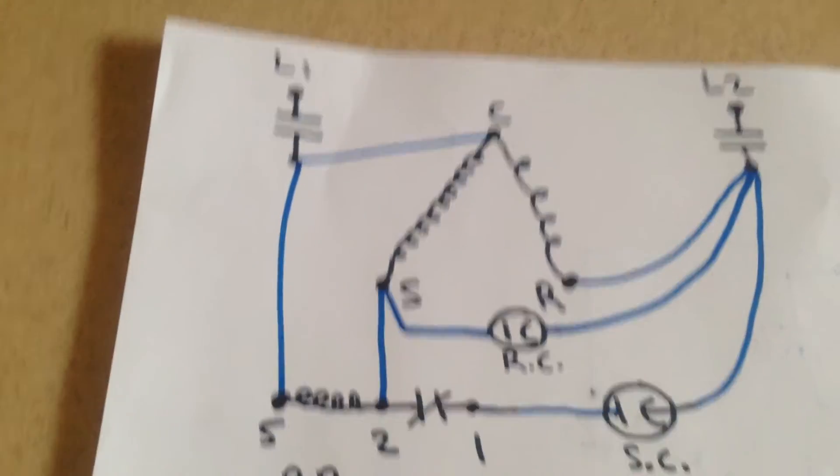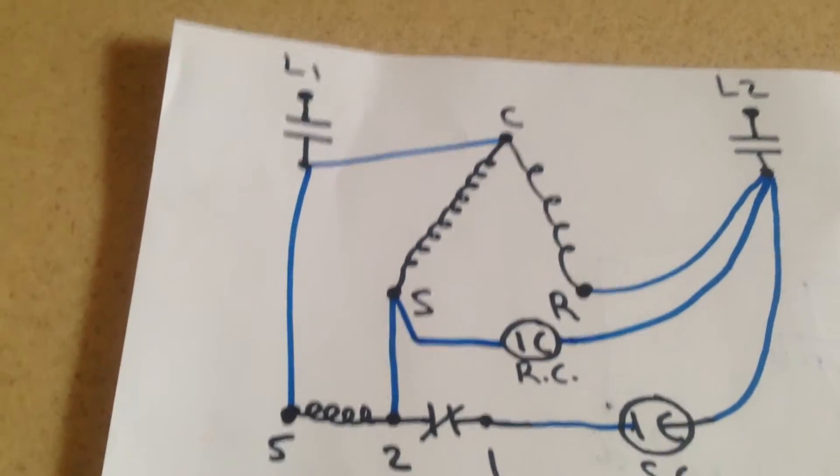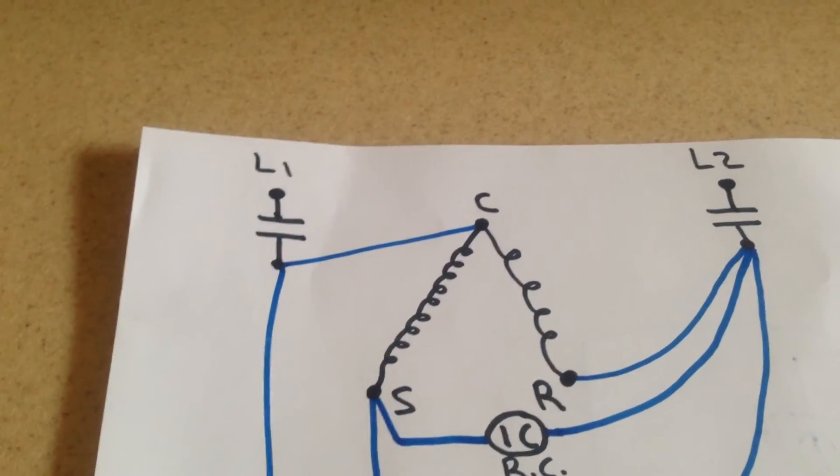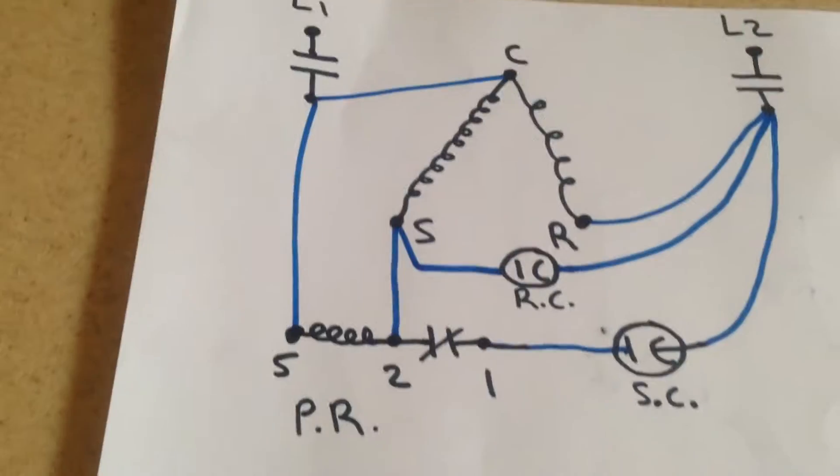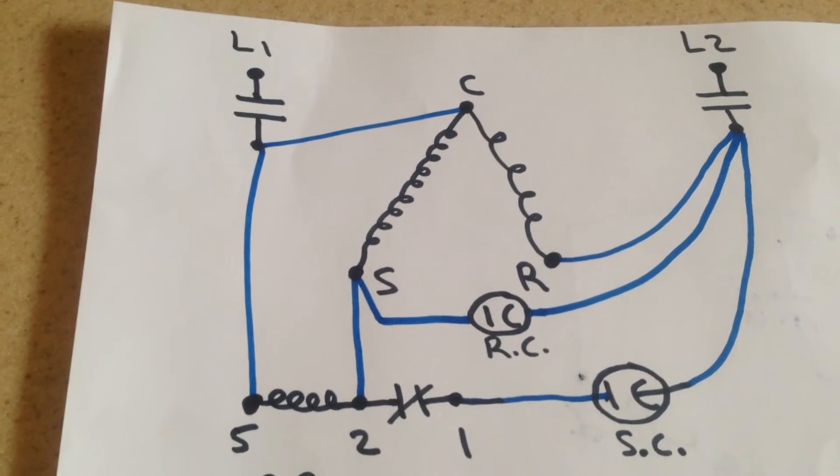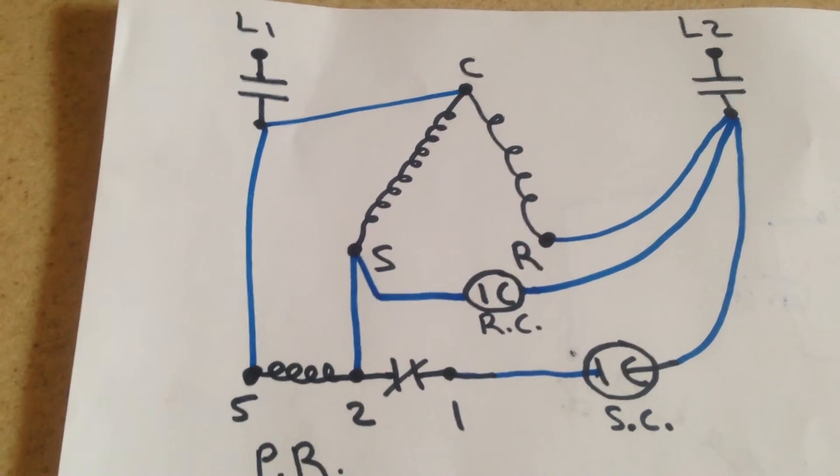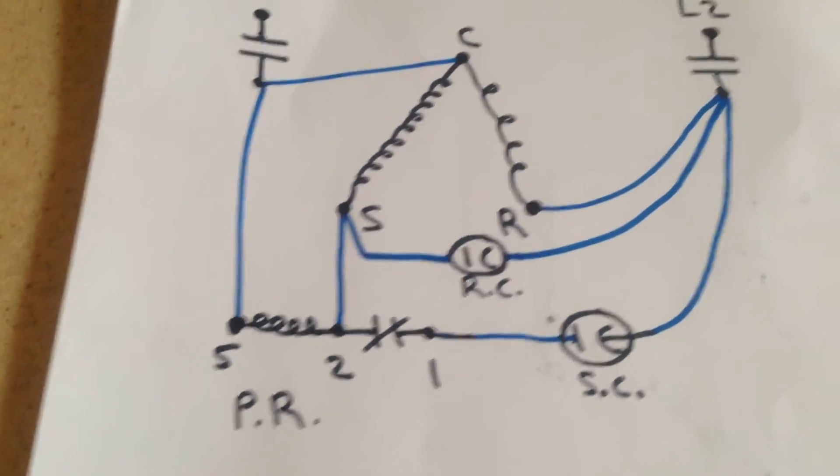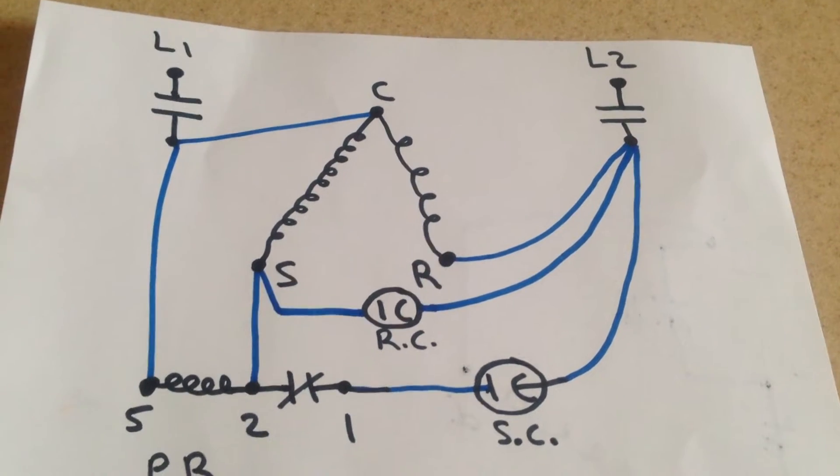And it's going to measure number 5. It's going to be hooked up to the same side as the common on the compressor. Number 2 is going to be hooked up to the same side as the start winding terminal. And number 1 is going to go to the same side as run.